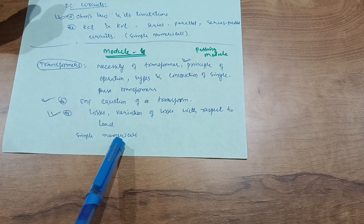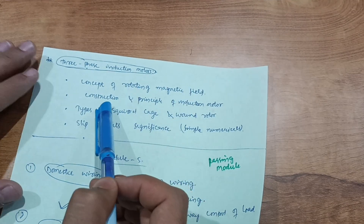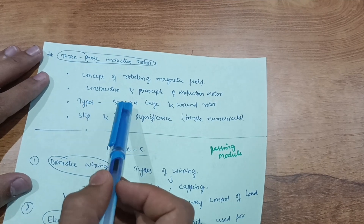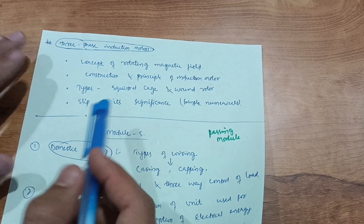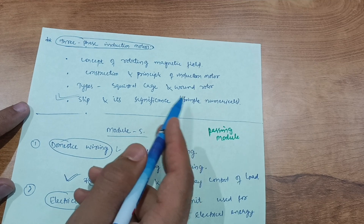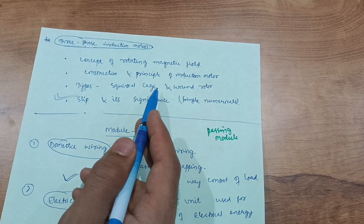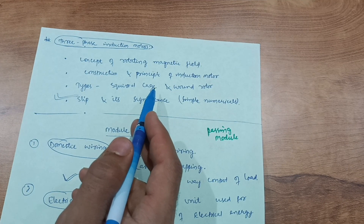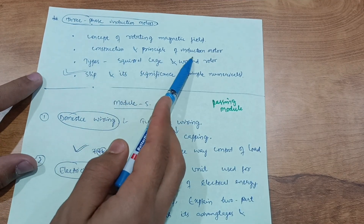The major portion is theory, so focus on transformer theory. Then for the three-phase induction motor part, you should have the concept of rotating magnetic field. Cover construction and principle of the induction motor, and types — squirrel cage and wound rotor. Slip and its significance is the most important question for three-phase induction motors. Construction and principle of induction motor will definitely come as a seven-mark question in the examination.